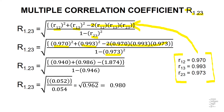Solving the expression further: the square of 0.970 is 0.940, the square of 0.993 is 0.986, and when 2 is multiplied by 0.970, 0.993, and 0.973, it becomes 1.874. The square of 0.973 is 0.946, and when 0.946 is subtracted from 1, it reduces to 0.054.